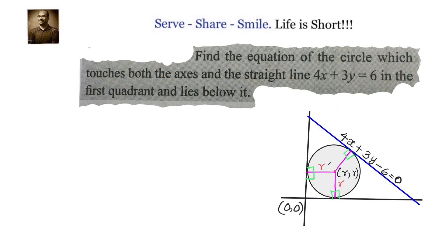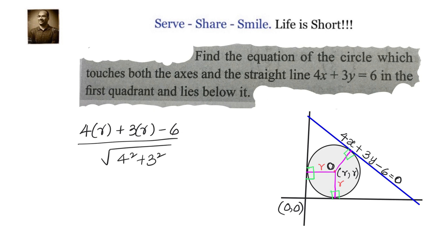We know that the perpendicular distance from the centre to the line 4x plus 3y minus 6 equals to 0 is the radius. The formula for perpendicular distance of point x1 comma y1 from the line Ax plus By plus c equals to 0 is Ax1 plus By1 plus c divided by the square root of A squared plus B squared. So, this perpendicular distance is equal to r.